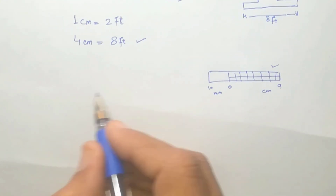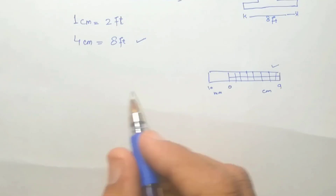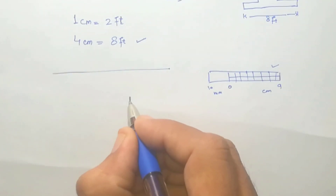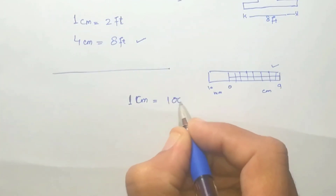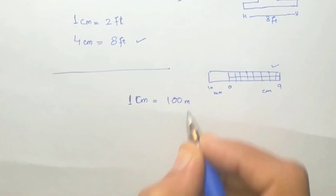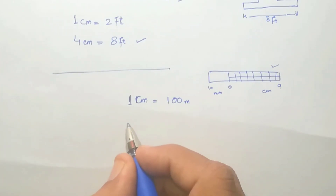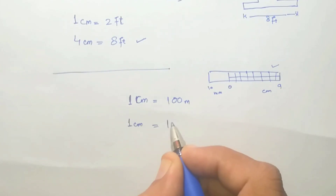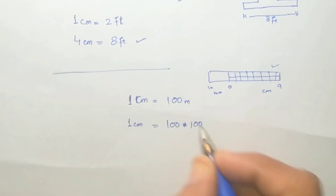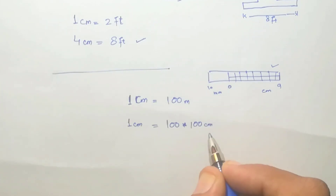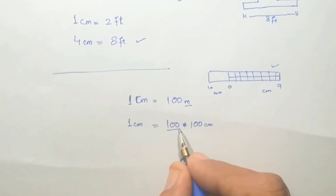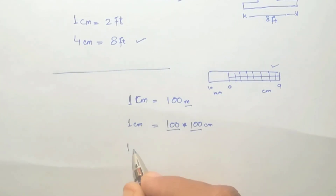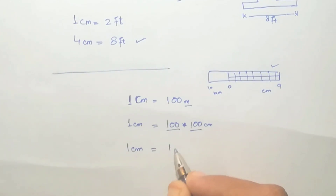The third expression of scales is the Representative Fraction. As we discussed in the Engineer's Scale, if 1 centimeter equals 100 meters, we need to convert both values to the same units. Since 100 meters equals 10,000 centimeters, the Representative Fraction becomes 1 divided by 10,000.